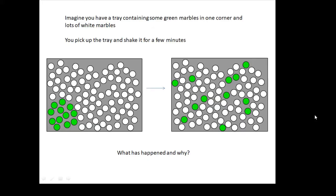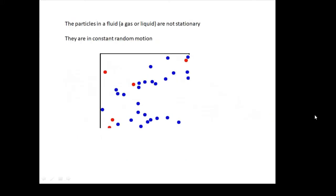And that is what diffusion is. The particles in a fluid—a fluid is a gas or a liquid—they're not stationary, they're moving. They're in a constant random motion, jiggling around and mixing with each other.